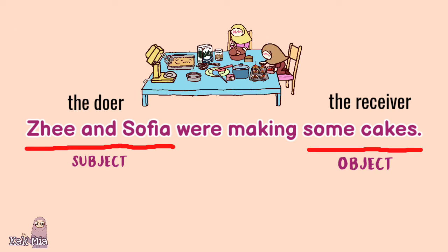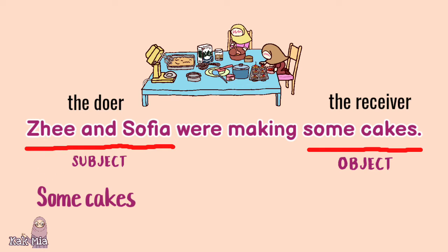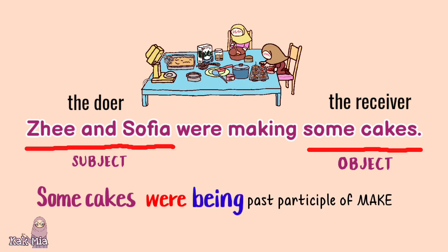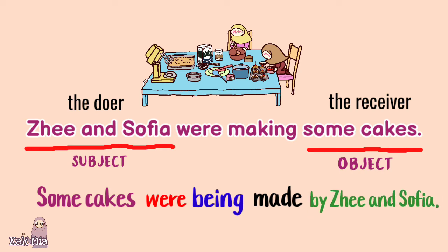To change your sentence into its passive voice, we have to put the receiver at the beginning of the sentence. So we type 'some cakes' here. After that, we write down 'was' or 'were'. This phrase is in the plural form, so we have to use 'were'. Next, just add 'being', which is then followed by the past participle of the verb — 'made'. Finally, you can add the by phrase, which tells who the doer is. So the sentence becomes: 'Some cakes were being made by Zee and Sophia.'